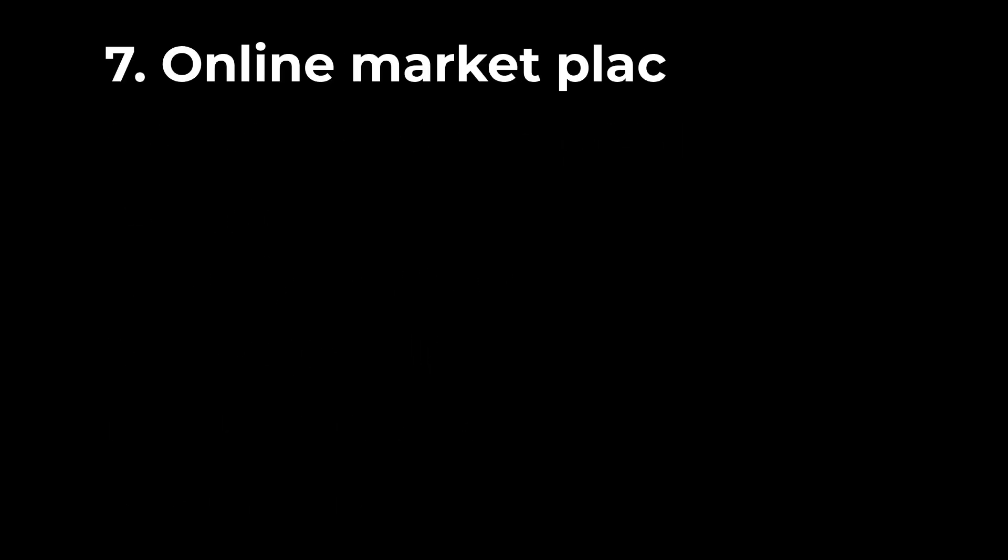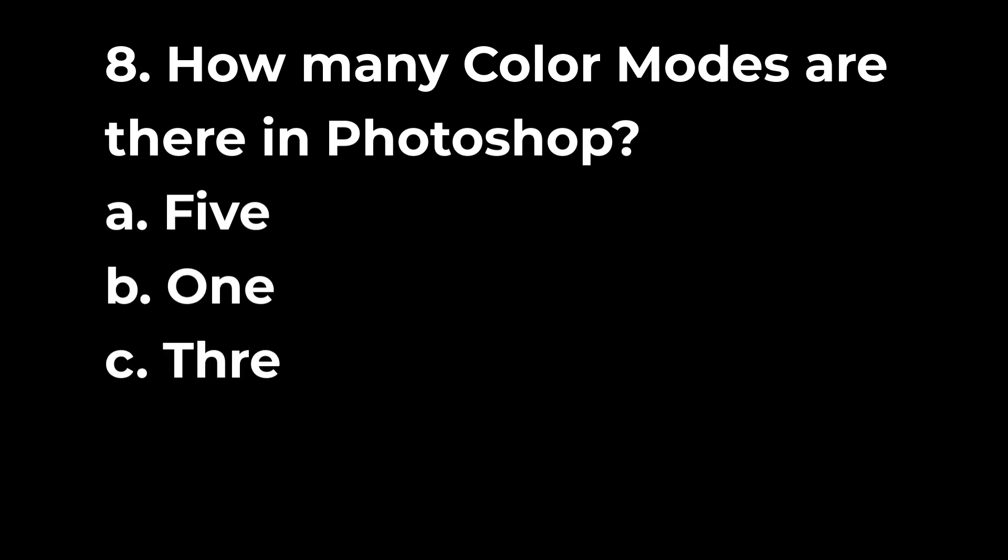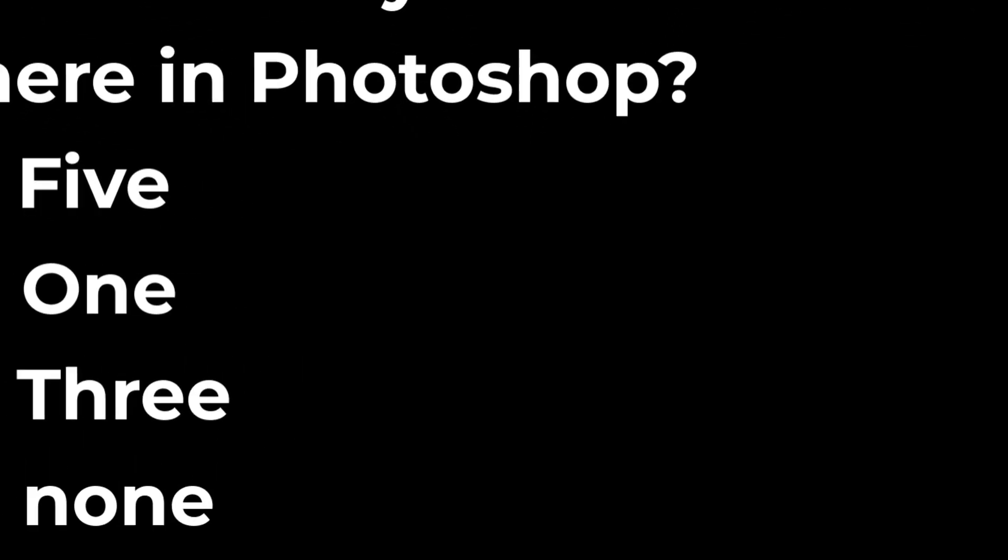Question 7: Online marketplaces are visited through a. Computer b. Mobile c. GPS d. Internet. Question 8: How many color modes are there in photoshop? a. 5 b. 1 c. 3 d. None.